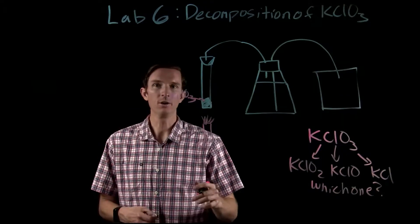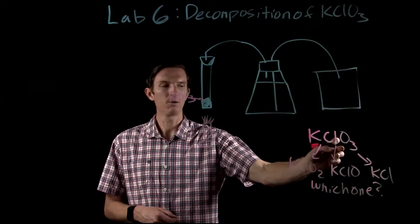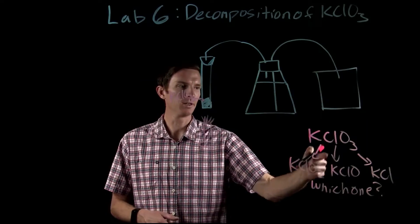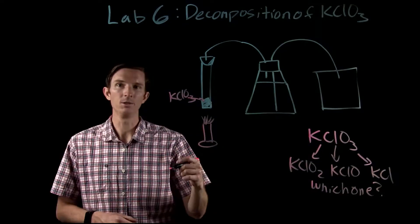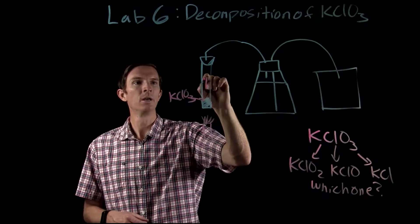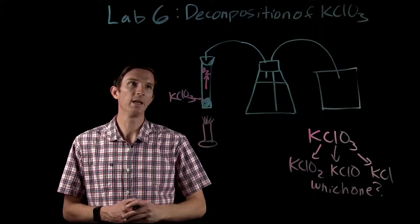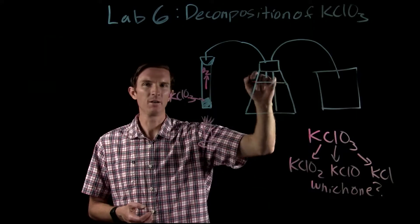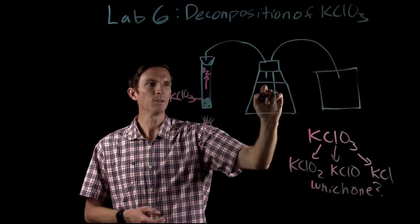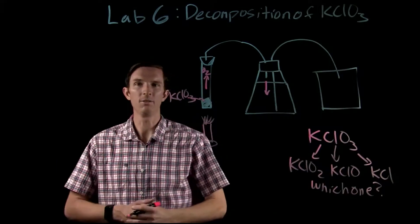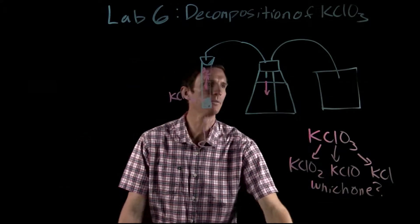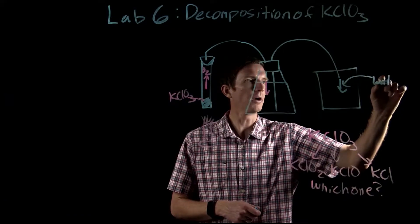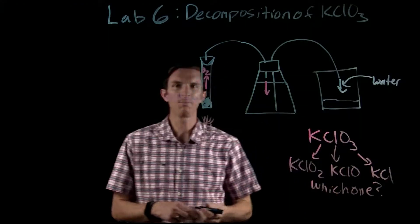When that happens, you'll notice that as our potassium chlorate goes to either potassium chlorite, potassium hypochlorite, or potassium chloride, it is going to release oxygen — it's going to release O2. As our reaction happens and we give off O2, we know that O2 is a gas. That gas is going to go through our tubing and fill up this container. Since it's open on both sides, that's going to push our water level down.